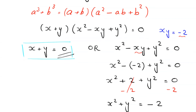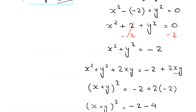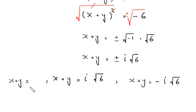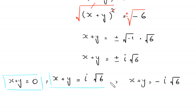So we have three solutions for x + y: x + y = 0, x + y = i√6, and x + y = -i√6.